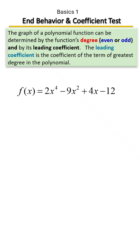The graph of a polynomial function can be determined by the function's degree, whether that's even or odd, and by its leading coefficient.